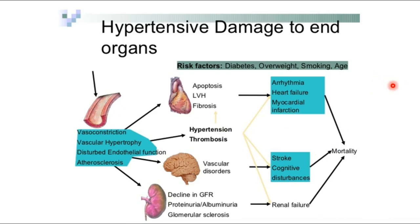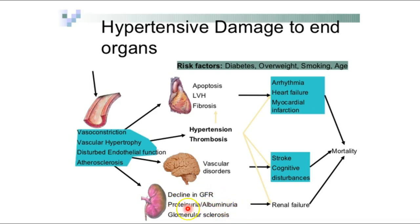Examples of end organ damage: apoptosis of heart cells, fibrosis and scarring, left ventricular hypertrophy leading to arrhythmias, heart failure, and myocardial infarction. In the brain: stroke and cognitive disturbance. In the kidneys: decline in glomerular filtration rate, proteinuria or albuminuria — meaning you're losing albumin in urine, causing systemic edema — and glomerular sclerosis leading to renal failure. All of these can kill you.